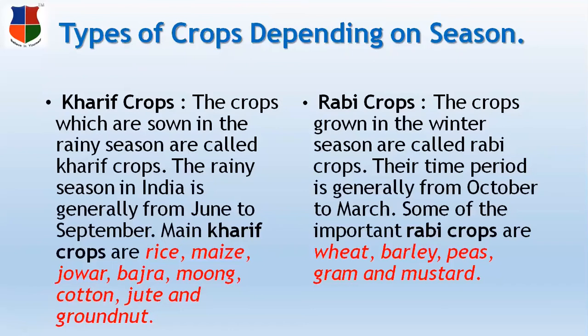Types of crops which are sown in the rainy season are called Kharif crops. The rainy season is generally from June to September. Main Kharif crops are rice, jowar, bajra, moong, cotton, and groundnut. So the crops which are grown in the rainy season are called Kharif crops, and the months are June to September.